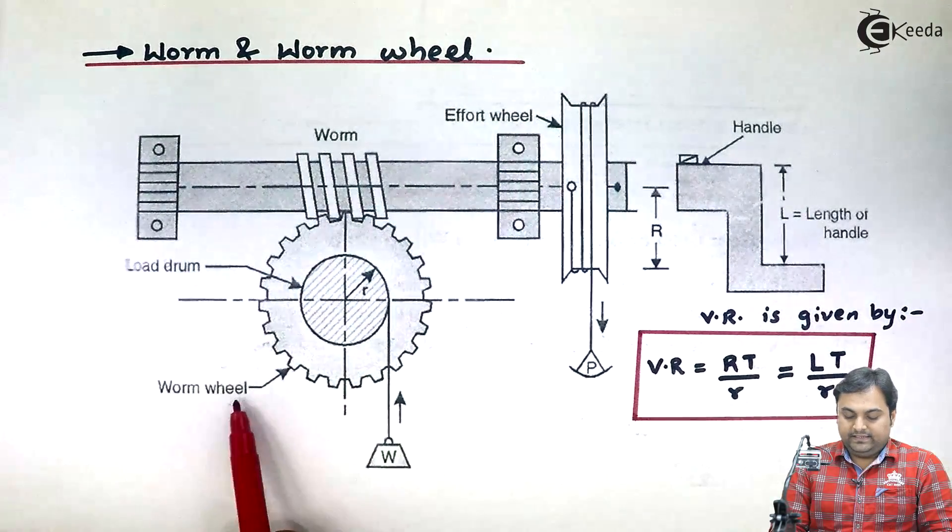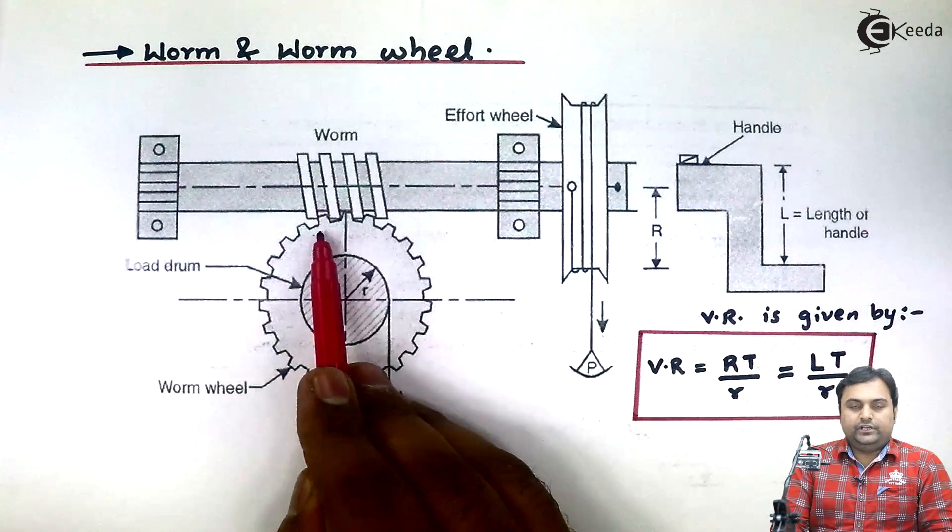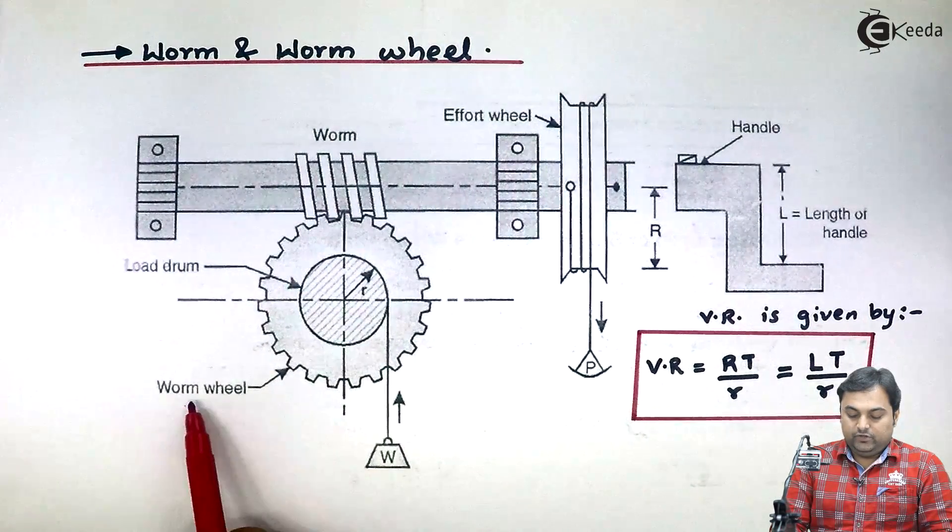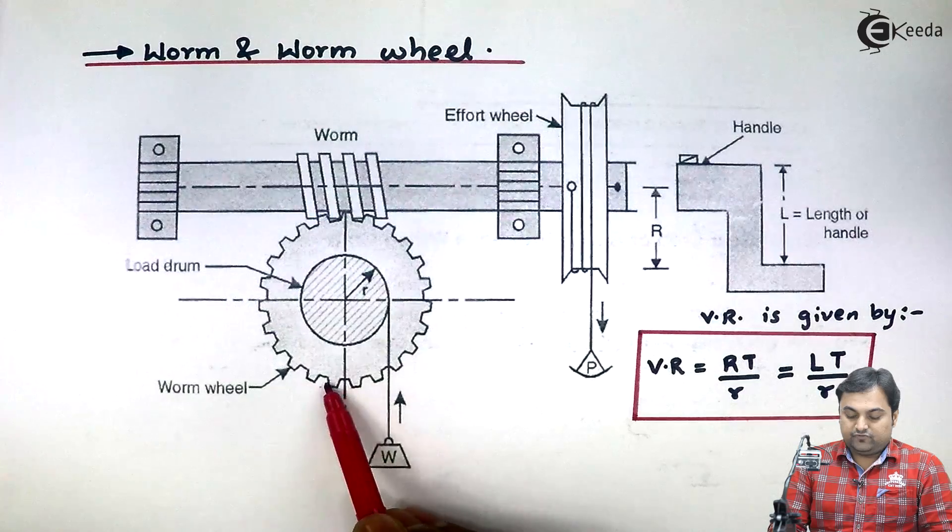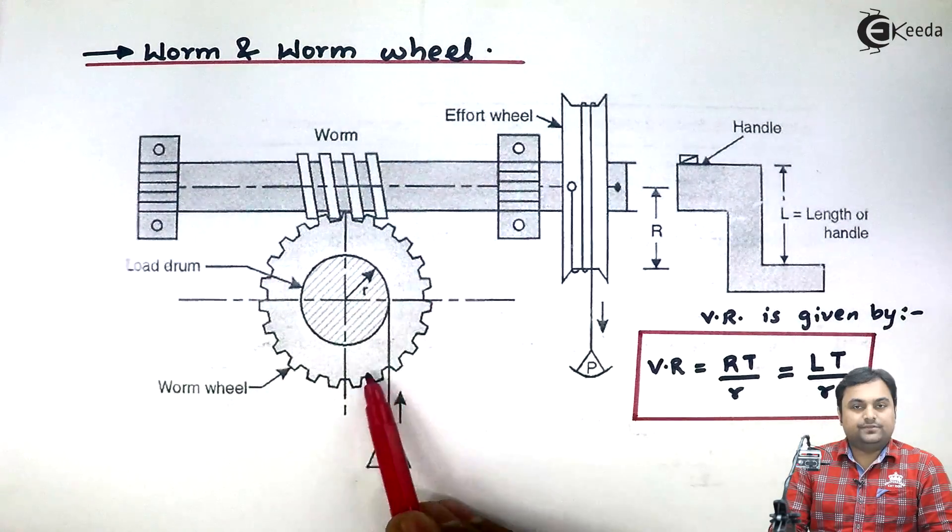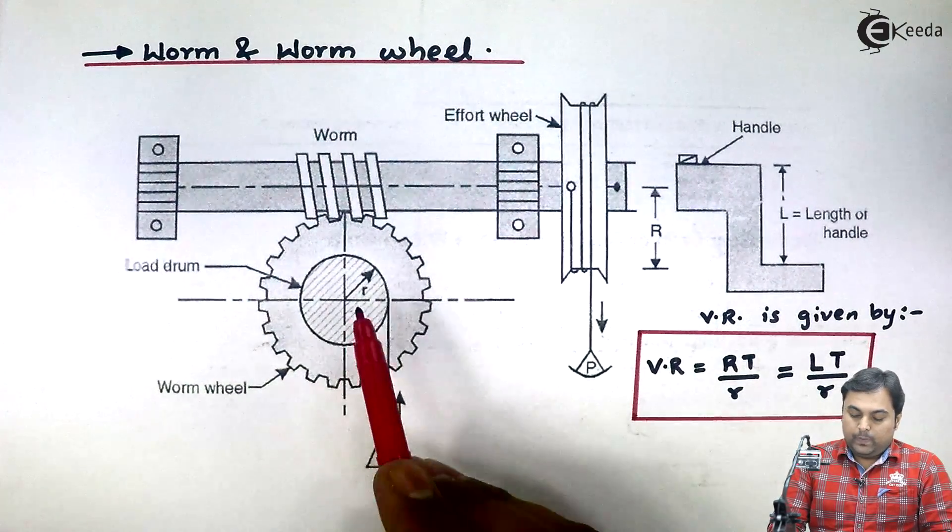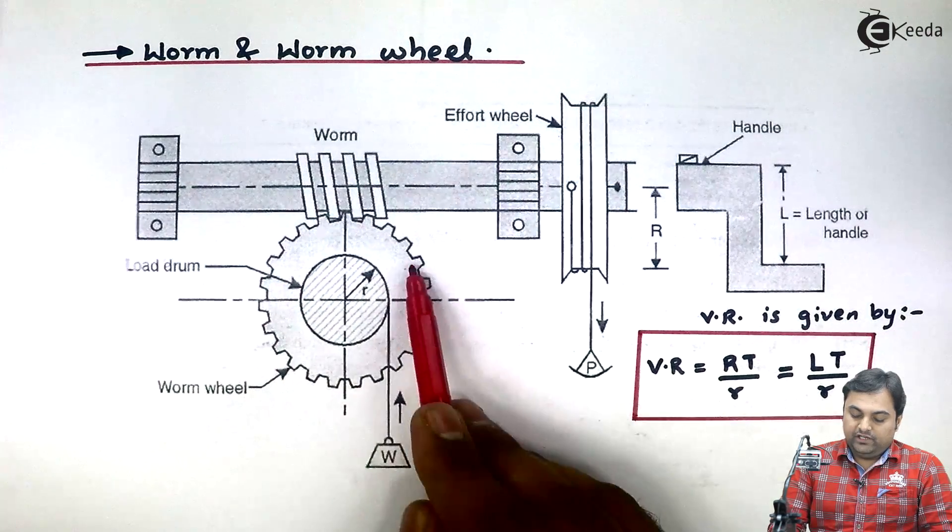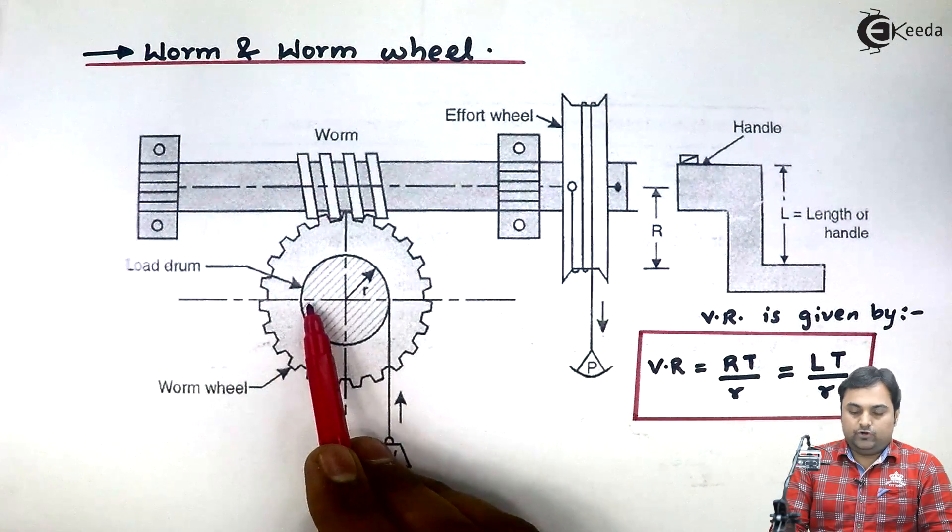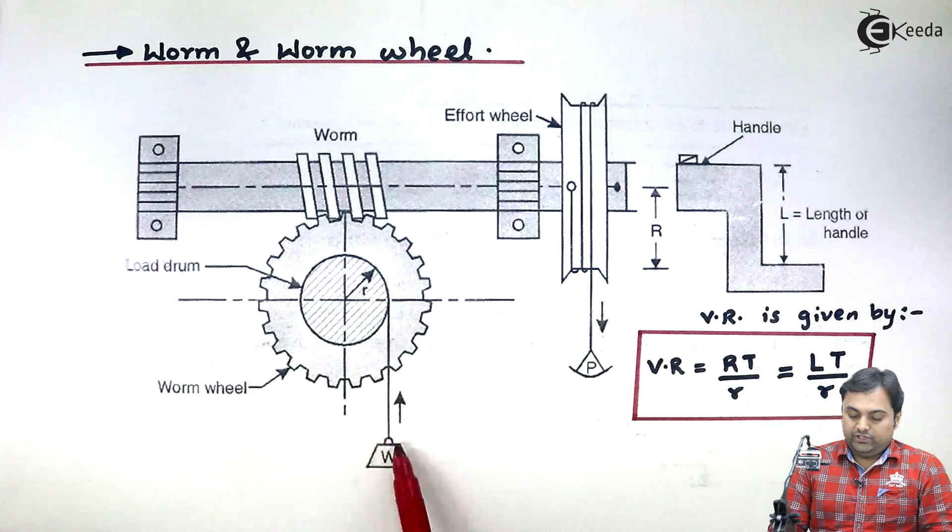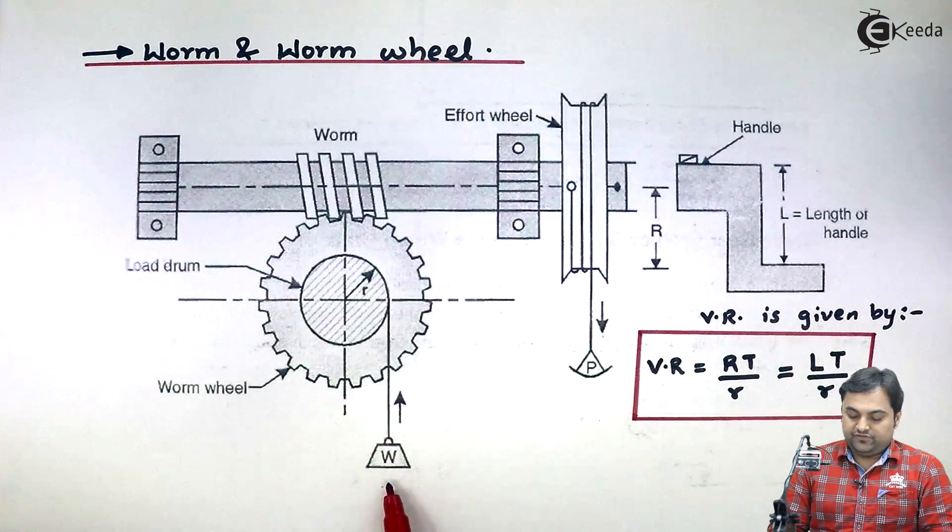And then it is in mesh or in connection with a wheel which is called as worm wheel. This worm wheel looks like a gear. Now over this worm wheel we are having a load drum or we can say shaft to which the load is attached which we want to lift.